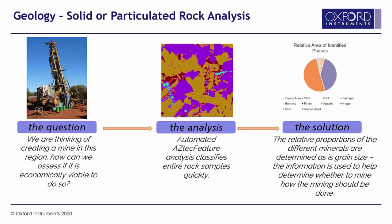We could use automated feature analysis in a geological example much like the one I've been showing. Say a geological company were considering creating a mine in a particular region and wanted to know if it was going to be economically viable. We could use automated feature analysis to look at really quite large rock sections and understand exactly what minerals are there in what proportions — and therefore whether there is enough of the mineral of particular interest to go ahead with the mining operation. It could also be used to see if there is anything particularly dangerous, perhaps the presence of arsenic within the rocks, and therefore if certain precautionary measures would need to be taken.